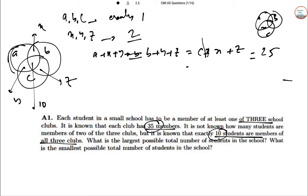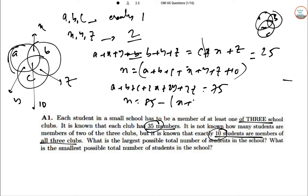So we want to find the maximum and minimum number of values of N that is A plus B plus C plus X plus Y plus Z plus 10. Adding the three constraints we get that A plus B plus C plus 2X plus 2Y plus 2Z equal to 75.